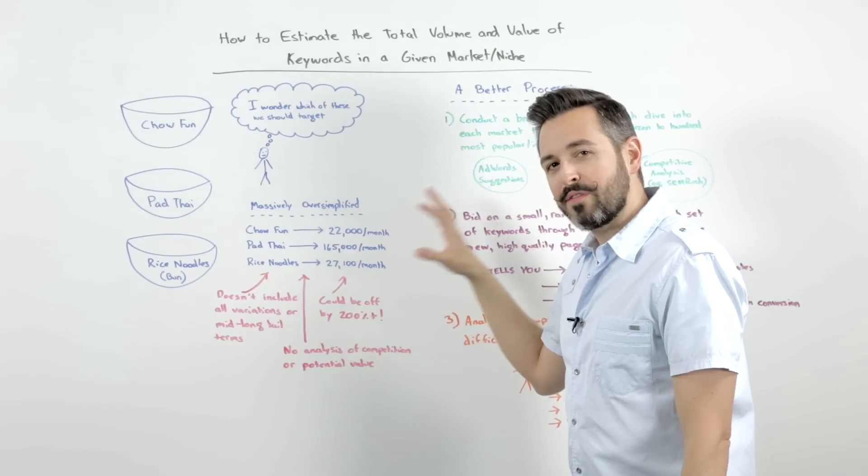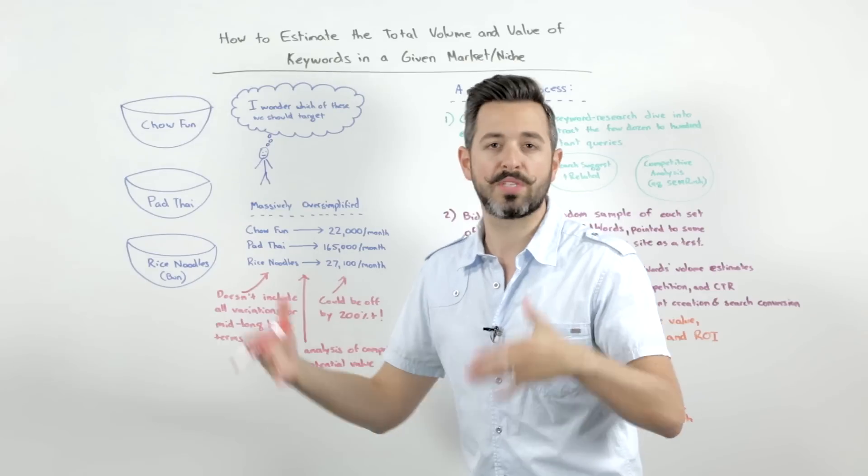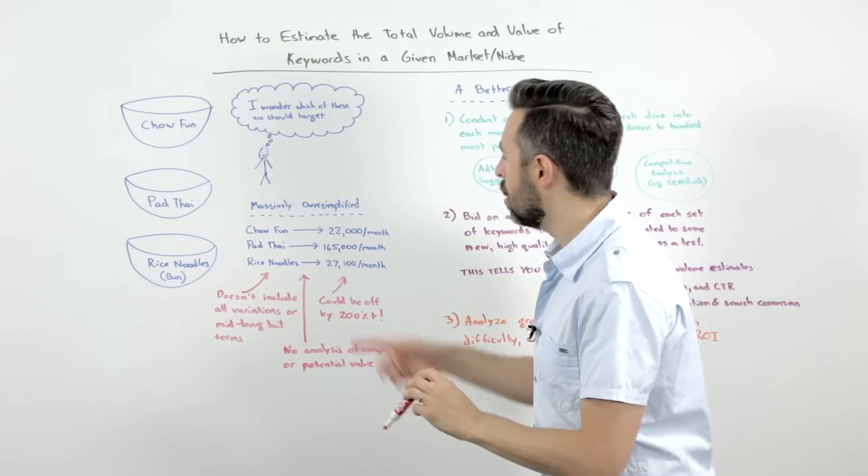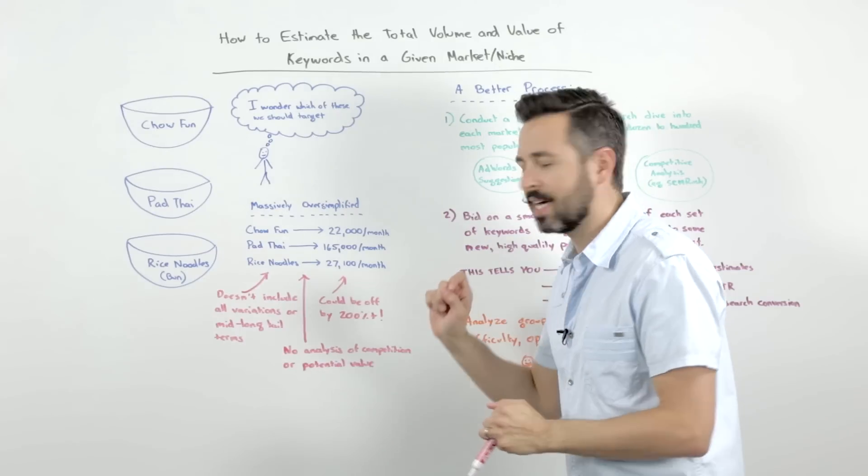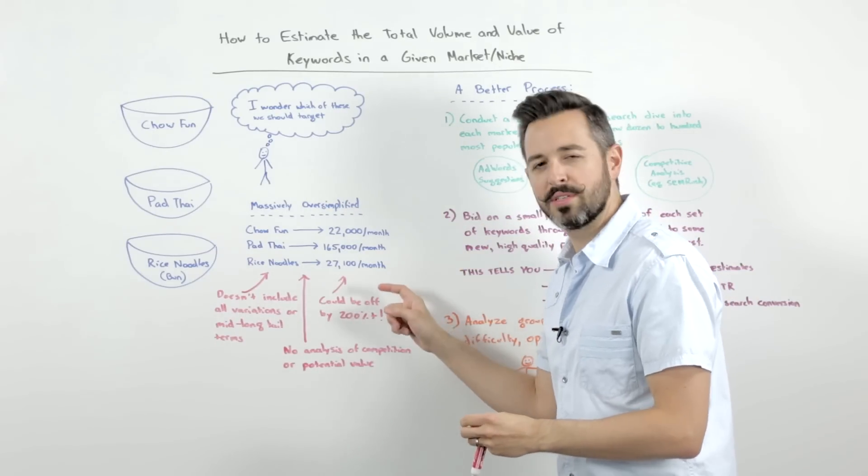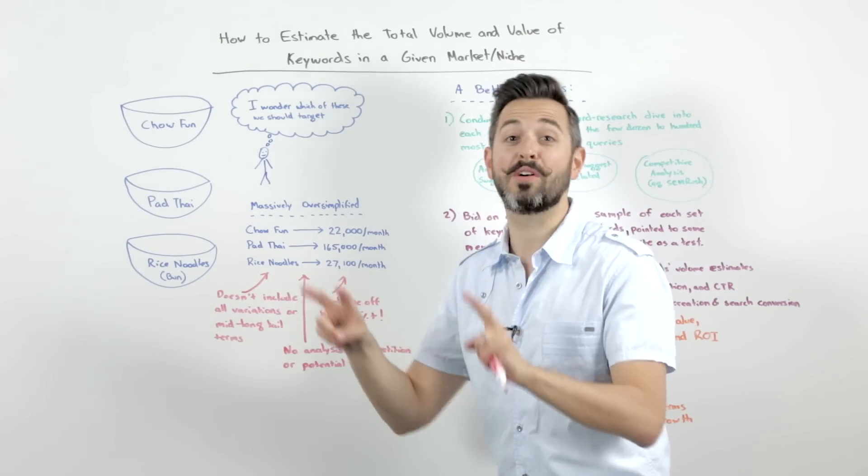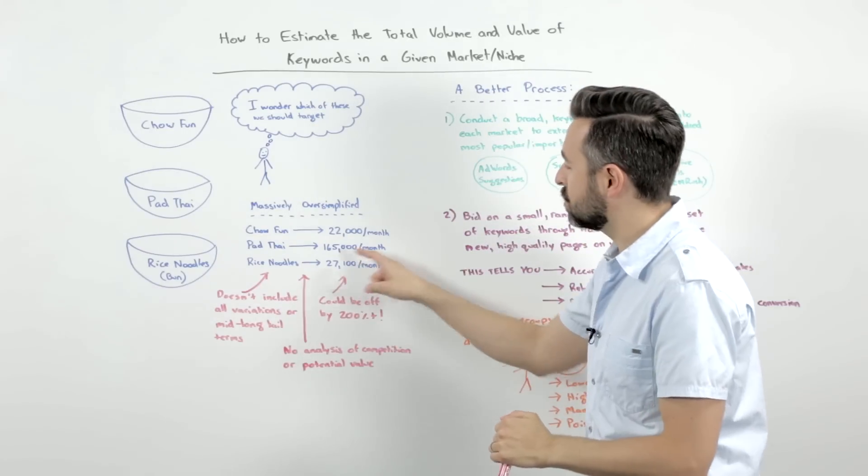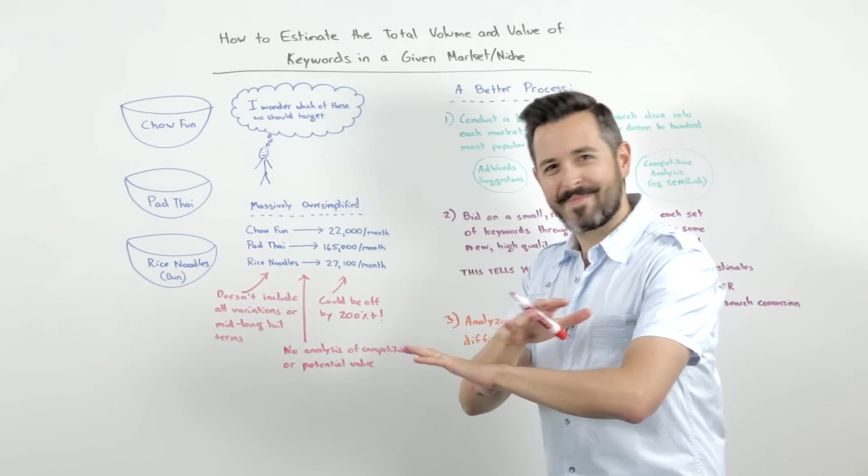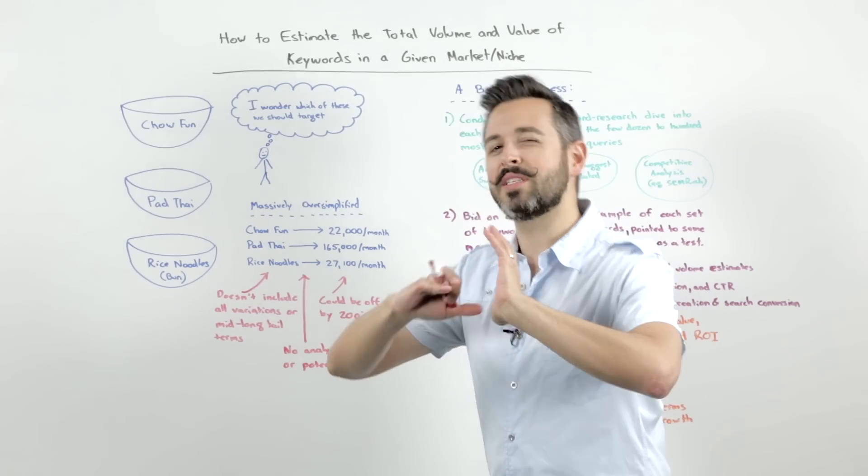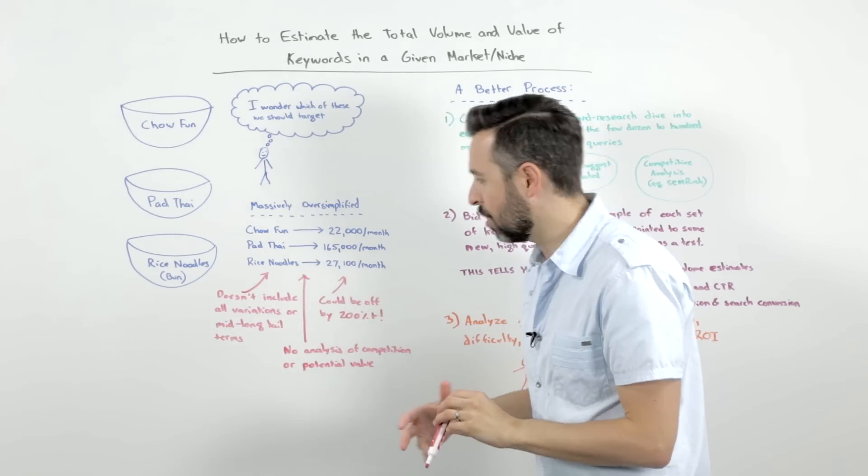A massively oversimplified version that a lot of people have done in the past is to look broadly at AdWords groups, the ones that AdWords selects for you, or individual keywords and say, okay, well, chow fun gets 22,000 searches a month, pad thai gets 165,000, and rice noodles, which is the most popular version of that query, gets 27,000. So well, there you go, one, two, three. It's dead wrong, right? It's totally oversimplified.